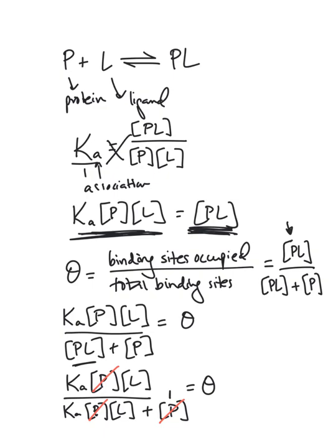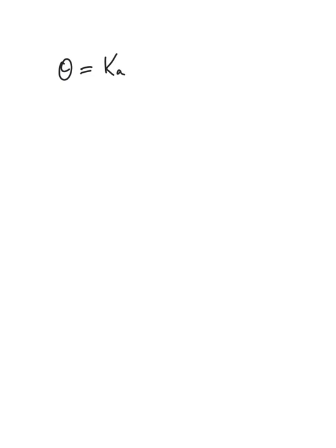Let's rewrite the expression with those P terms canceled out. We get theta equals Ka·L over Ka·L plus 1. If you think about it as canceling P out, the one remains there. More rigorously, since you're dividing every term by P — including the top term and each denominator term — you get a one where the standalone P was, but you don't write the one in the numerator since it's just multiplied.